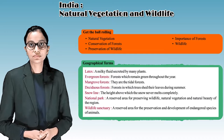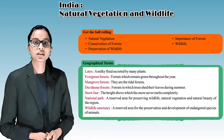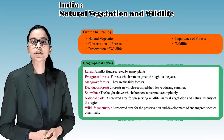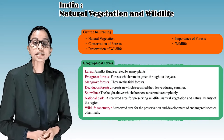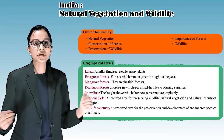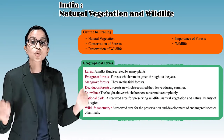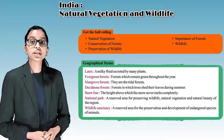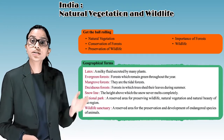Geographical terms: Latex is a milky fluid secreted by many plants. Evergreen forests are forests which remain green throughout the year. Mangrove forests are tidal forests. Deciduous forests are forests in which trees shed their leaves during summer. Snow line is the height above which the snow never melts completely. National park is a reserved area for preserving wildlife, natural vegetation, and natural beauty of the region.